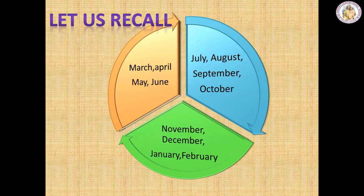Let us recall the months according to each season. March, April, May, June — these months are the summer months. Next, the picture with blue color: July, August, September, October — these months are called rainy months. The last one, the green color picture: November, December, January, February — these months are called winter months.